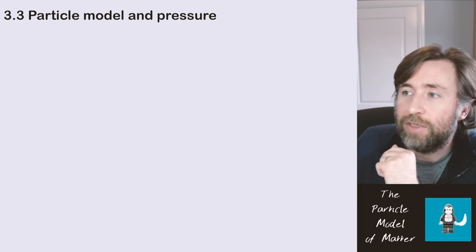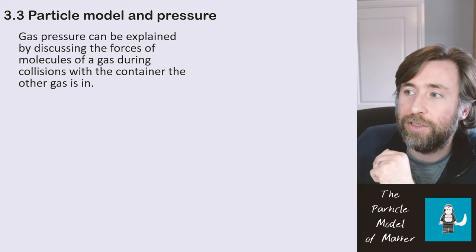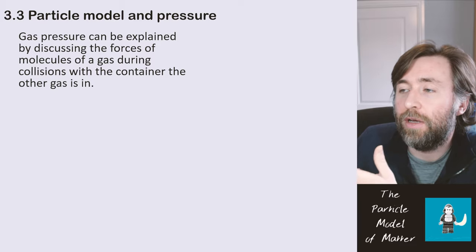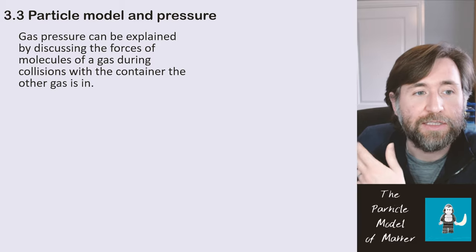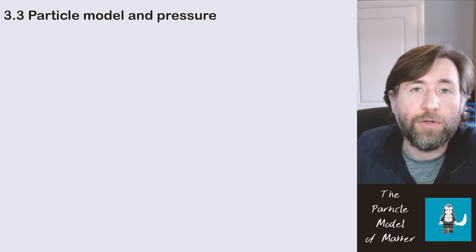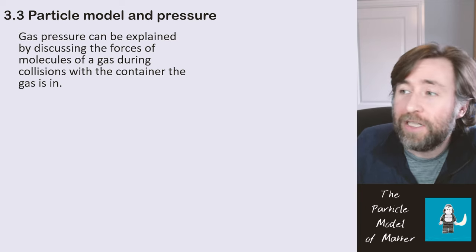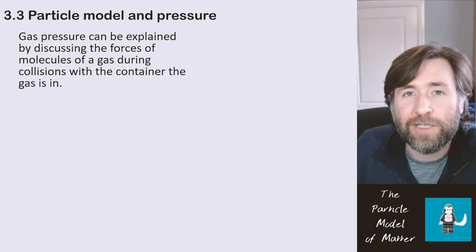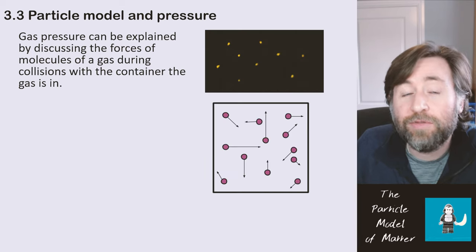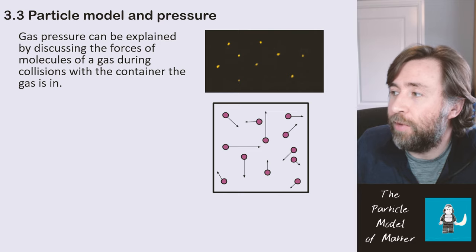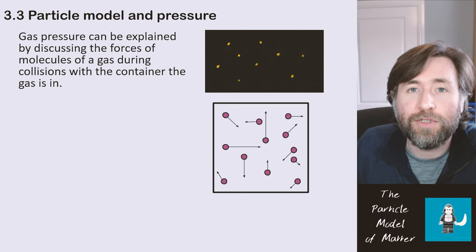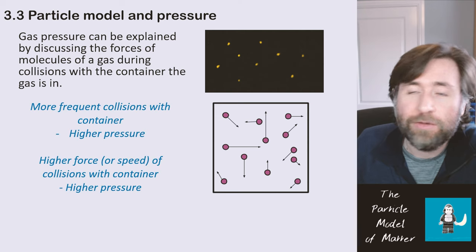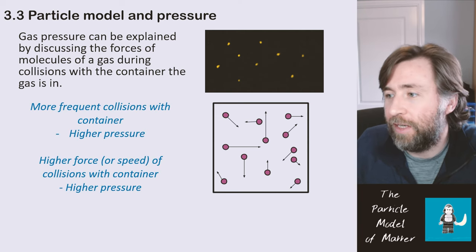We can use the particle model to explain gas pressure. Gas pressure can be explained by discussing the force of the molecules as they collide with the container that the gas is in. If you imagine these particles moving around inside the container, they're going to collide with the container, and the more frequently they do those collisions, the higher the gas pressure.